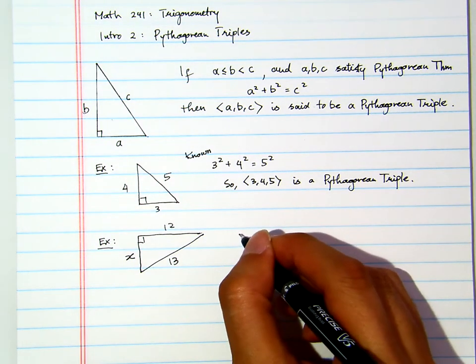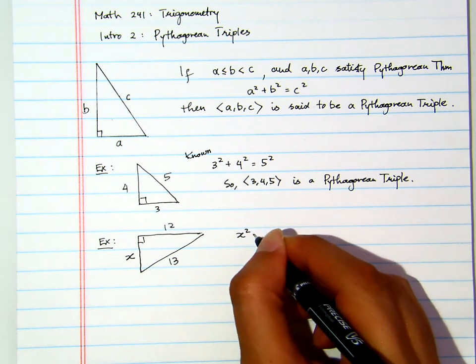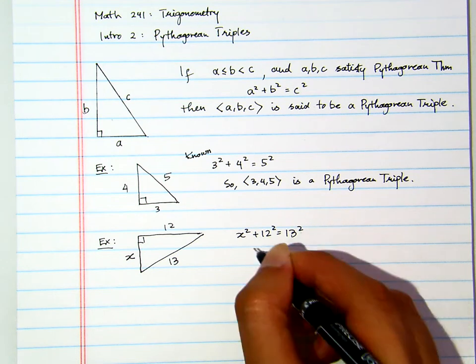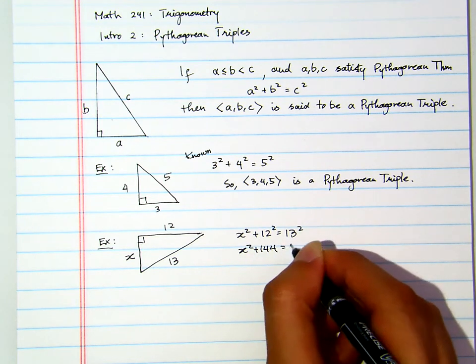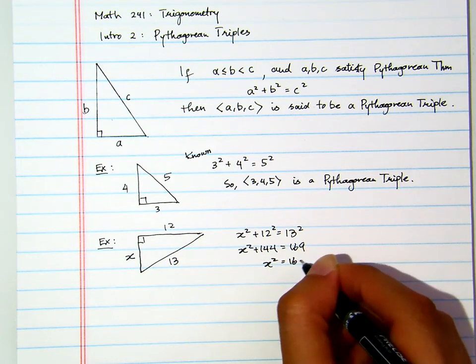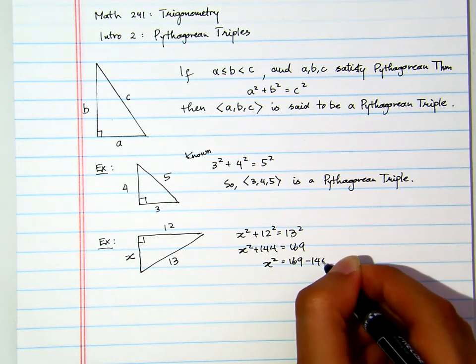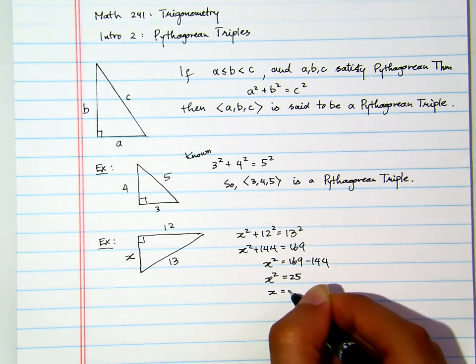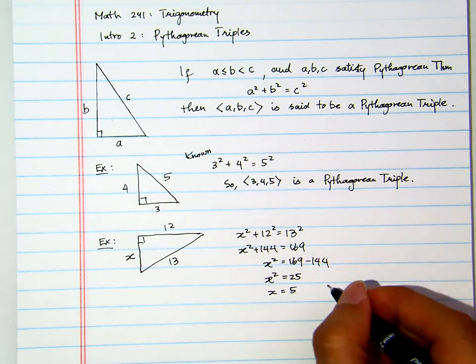Suppose this is 13, and suppose this is 12, and this is my X here. We will find what is X, and then later on we express that as a triple. We know that this will be X squared plus 12 squared equals to 13 squared. X squared plus 144 equals to 169. X squared equals to 169 minus 144. X squared equals to 25. X equals to 5.